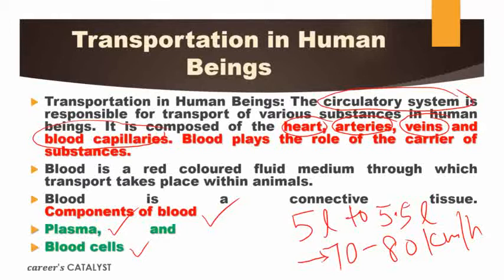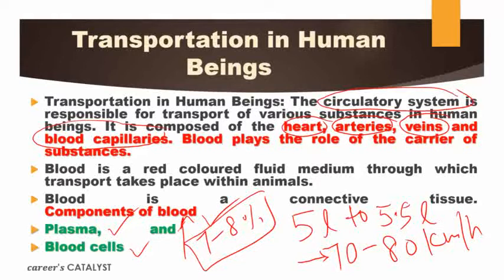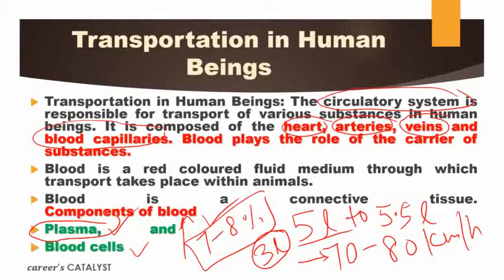This 5 to 5.5 liters of blood obviously will have some weight also. So 7 to 8 percent of our total body weight is only because of the blood present inside our body. In this particular 5 liters of blood, approximately 3 liters is plasma — a pale yellow colored liquid — and the remaining 2 to 2.5 liters will be your blood cells. So the cellular portion is 2 to 2.5 liters and approximately 3 liters is the liquid called plasma.